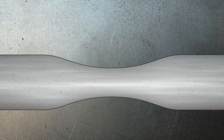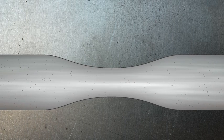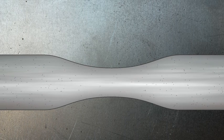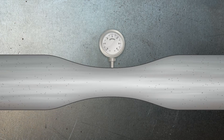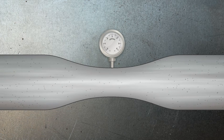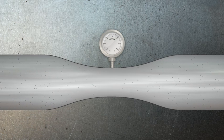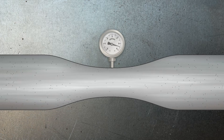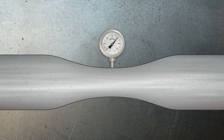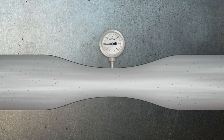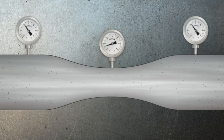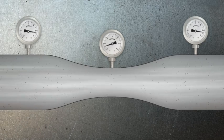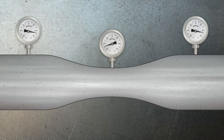Bernoulli's Principle is about the behavior of a fluid, a gas or a liquid, as it flows through a pipe or tube. It states that when the pipe narrows or widens, the fluid pressure and speed vary. As the pipe narrows, the speed of the flow goes up and the pressure goes down. When the pipe widens, the fluid flow slows down and the fluid pressure goes up.